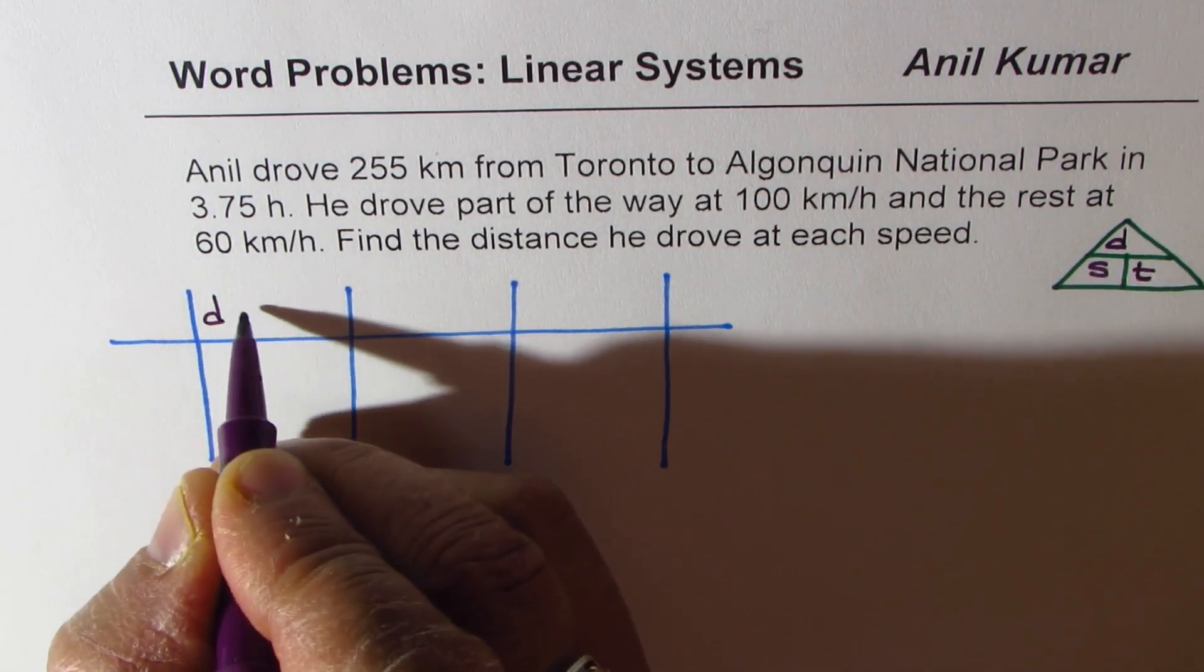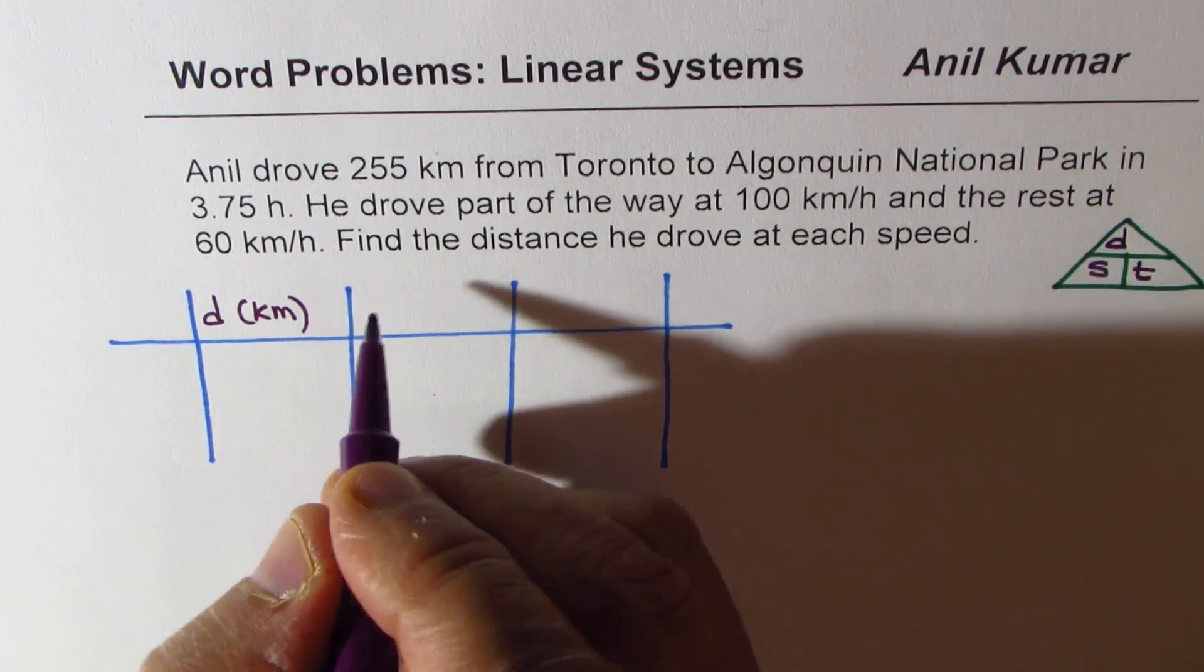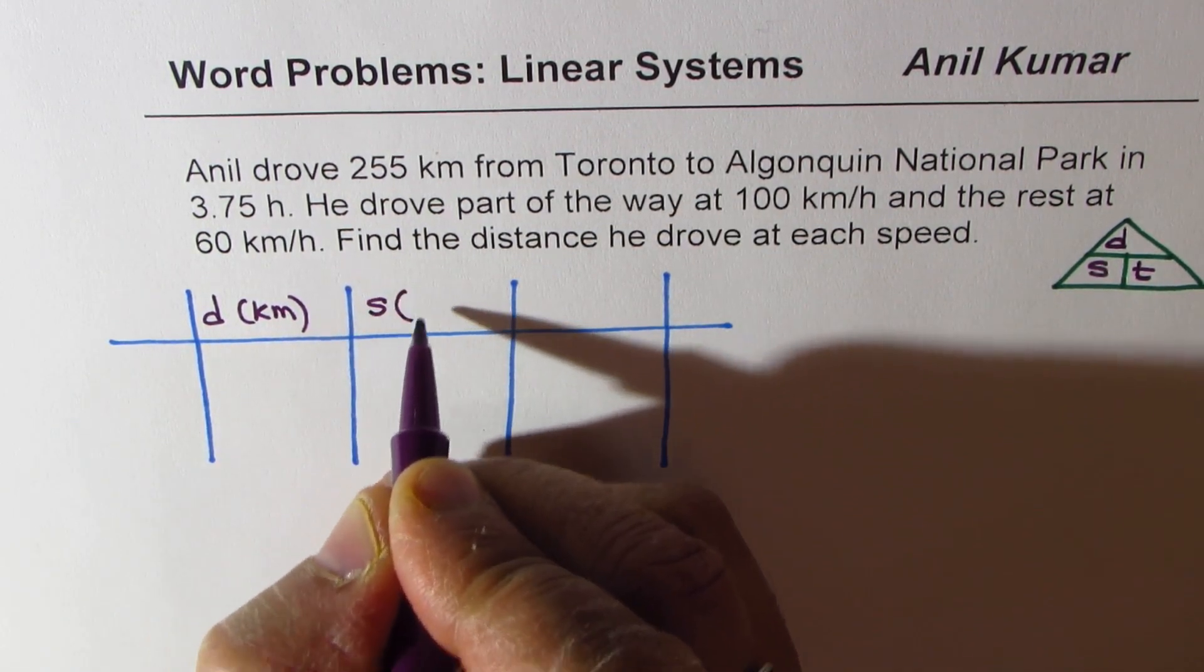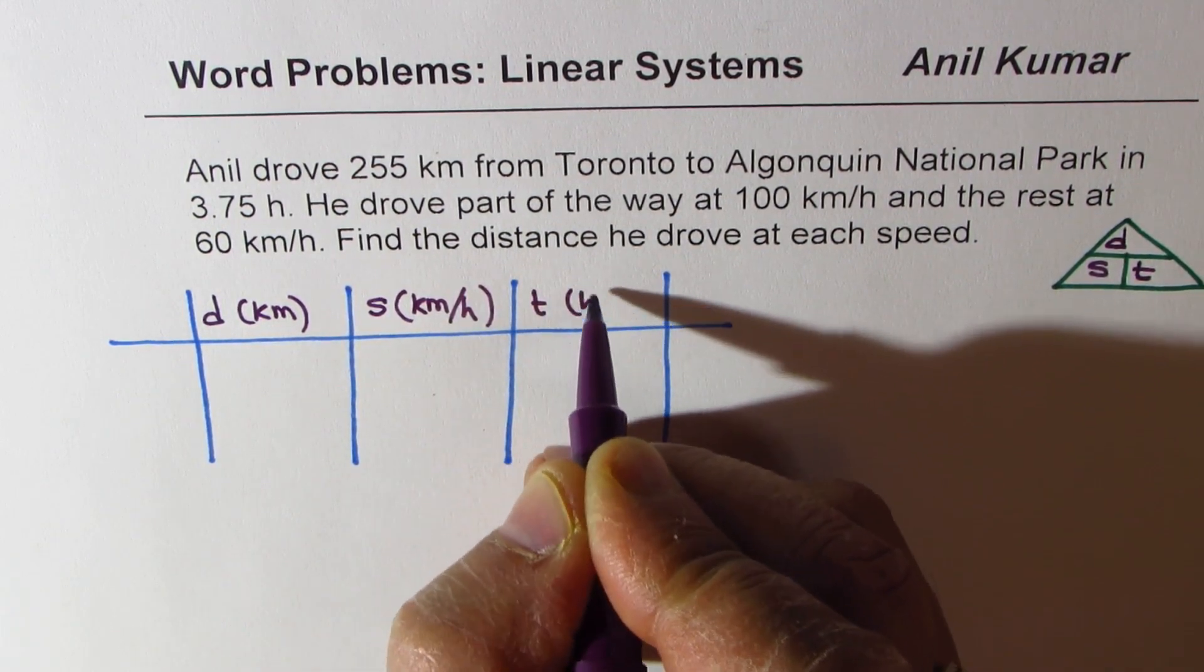We say distance, and distance is in kilometers in this question. Speed will be in kilometers per hour. Time is in hours.